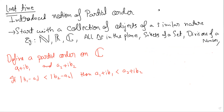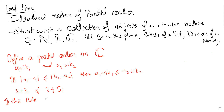This is a review, but these are different ways to think. Let's check if this is a partial order. For example, using this rule, we could say 2+3i is less than 2+5i because 5 minus 2 is bigger than 3 minus something. But is this actually a partial order? Transitivity holds — but is it an order? It is obviously reflexive. What about transitivity? Let's check.